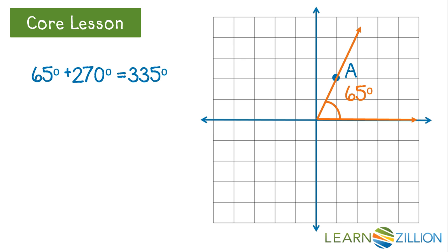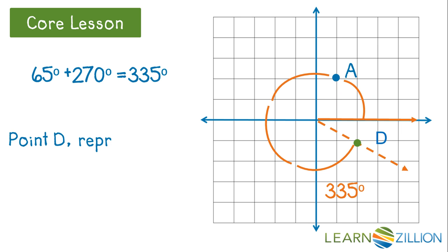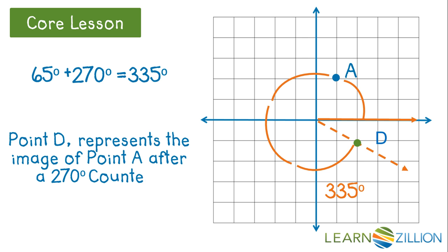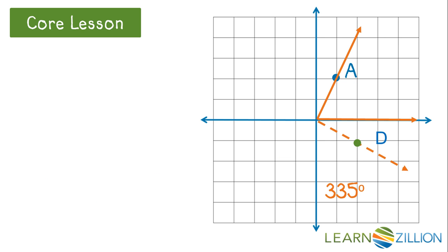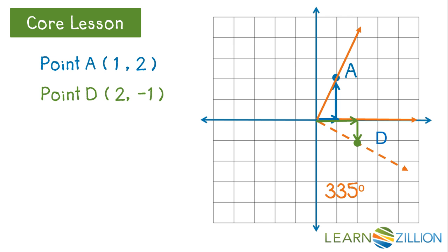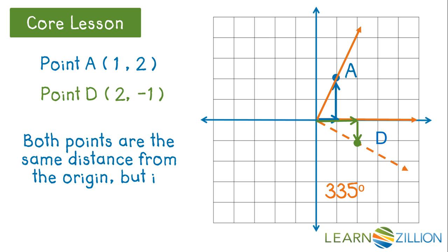Finally, I want to rotate point A 270 degrees. I know that the angle formed with point A measured 65 degrees, so I add 270 degrees and that gives me point D with an angle measure of 335 degrees. Let's draw that angle. Also notice that the angle between point A and D is 270 degrees — this angle shows how much we rotated. Point A is one unit right and two units up, and point D is two units right and one unit down. Different direction, same distance. Since point D is the same distance from the origin but with a different angle measure, it represents the image of point A after a rotation.